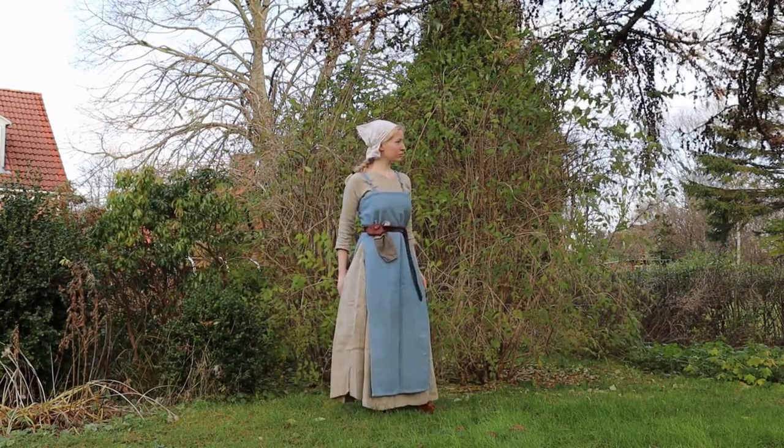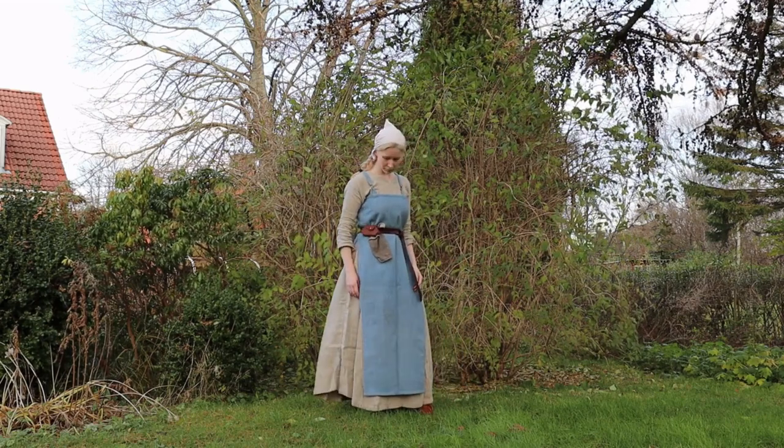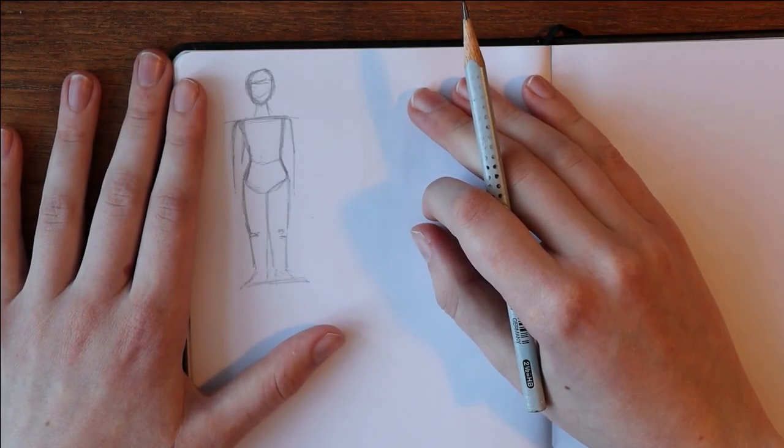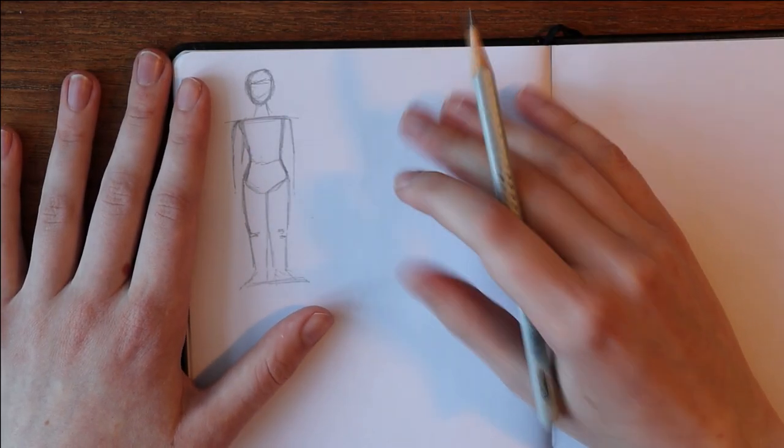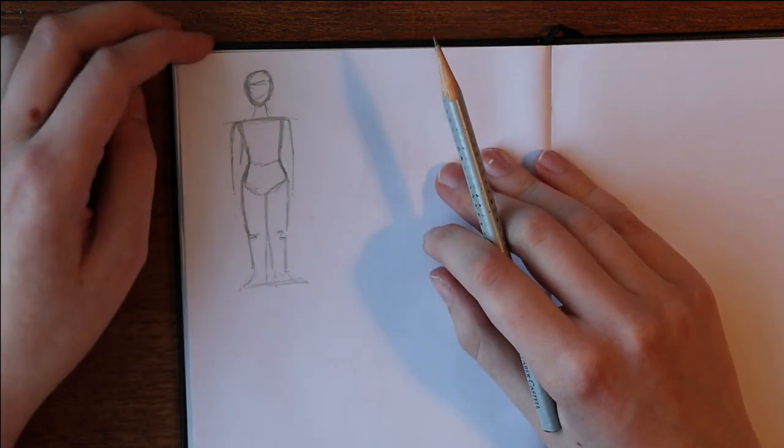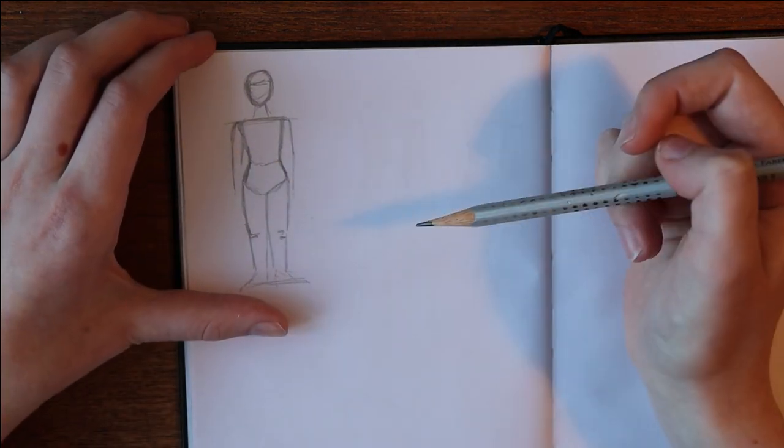It's fairly unfitted which makes it very easy to make, but if you want to give it more shape adding a belt at the waist does wonders. Like the underdress you have to draft your own pattern, but this one is even easier to make than the shift, so don't worry. I'm just going to take you through it.